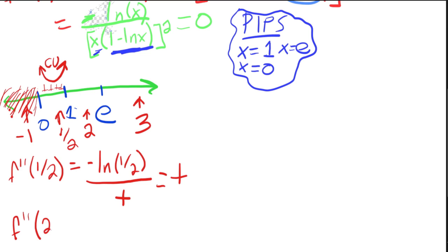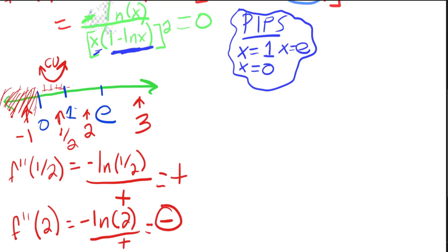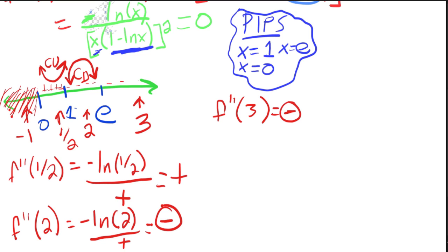Plugging in x equals 2, we get negative natural log of 2 over a positive denominator. Natural log of 2 is positive, so this is negative — meaning the function is concave down. And at x equals 3 we also get negative, so it's concave down there too. So there's no inflection point between 1 and e or beyond e.